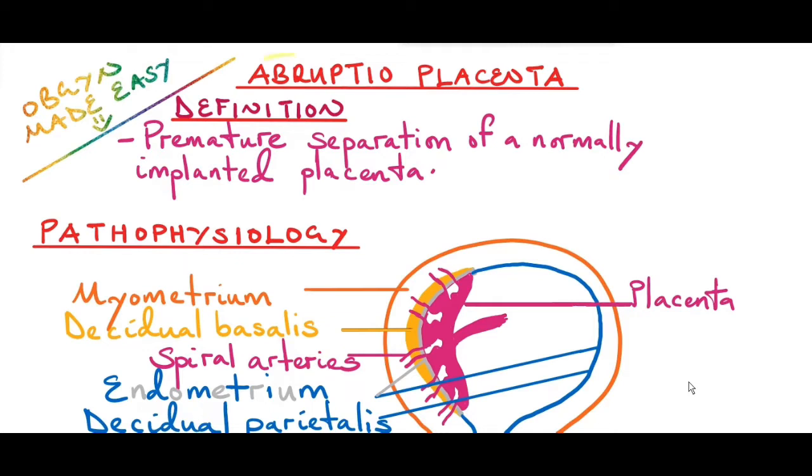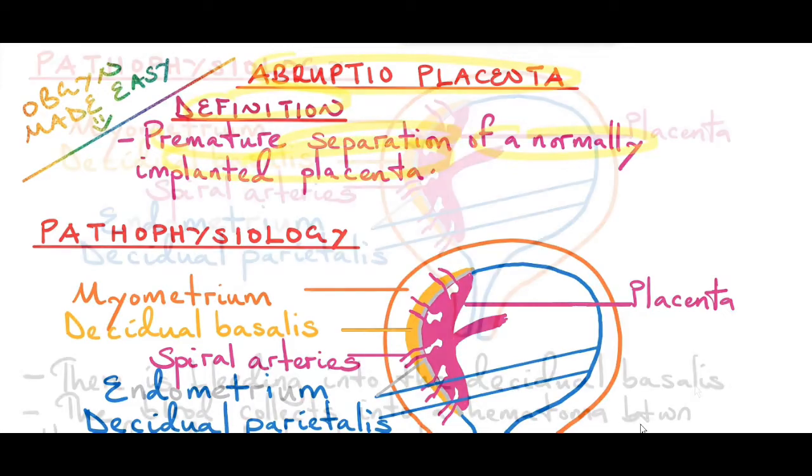So what is abrupta placenta? It's defined as the premature separation of a normally implanted placenta.